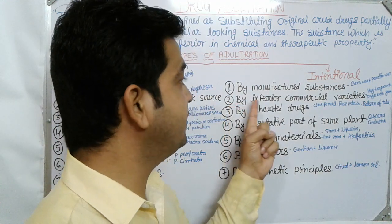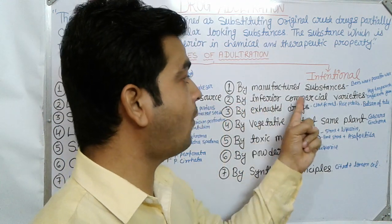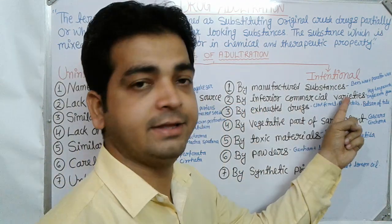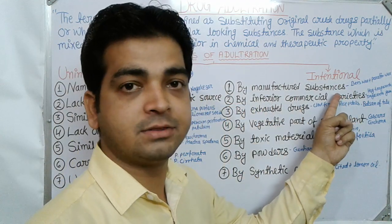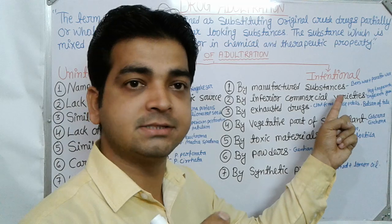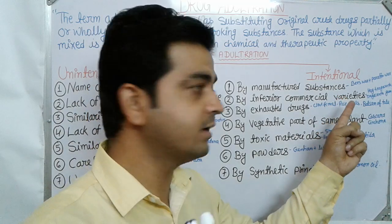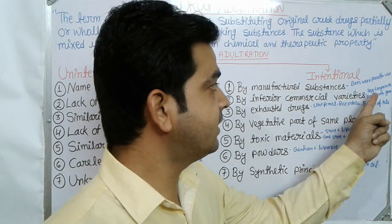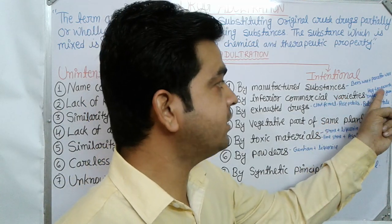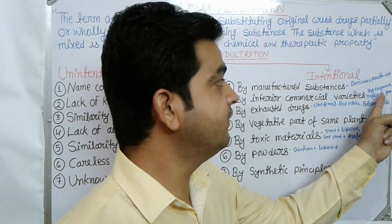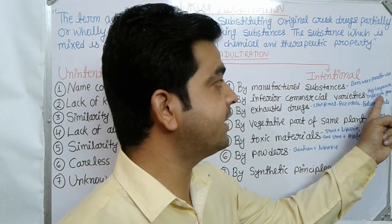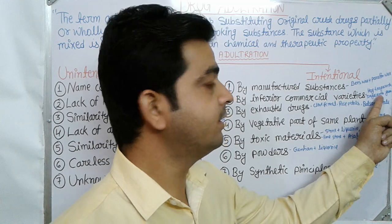The second type of intentional adulteration is by inferior commercial variety. The commercial variety used is inferior in quality. For example, Hawk tragacanth is mixed with tragacanth gum.